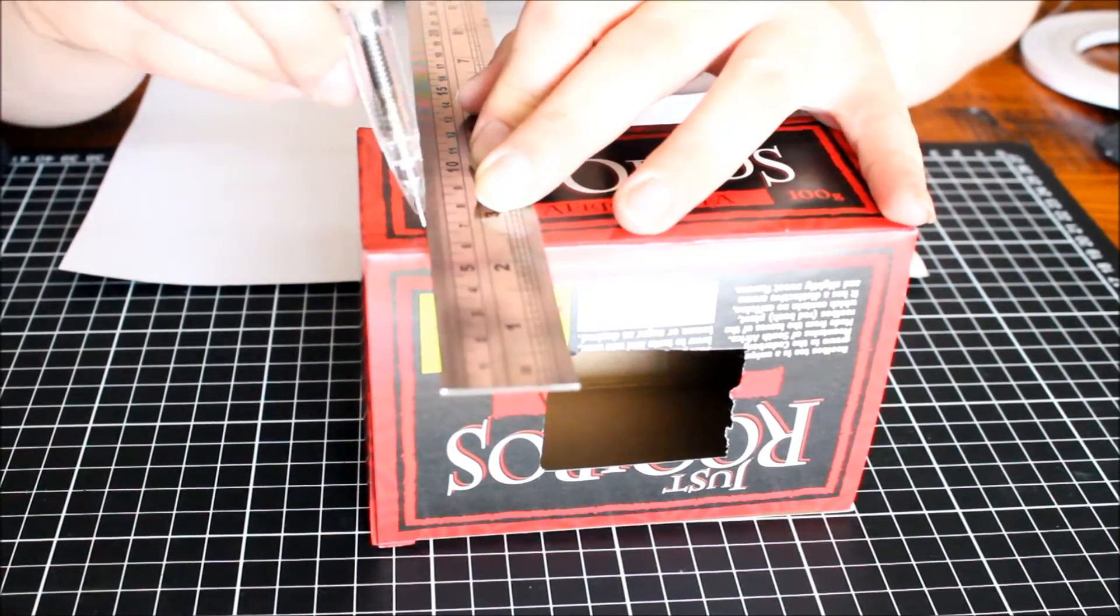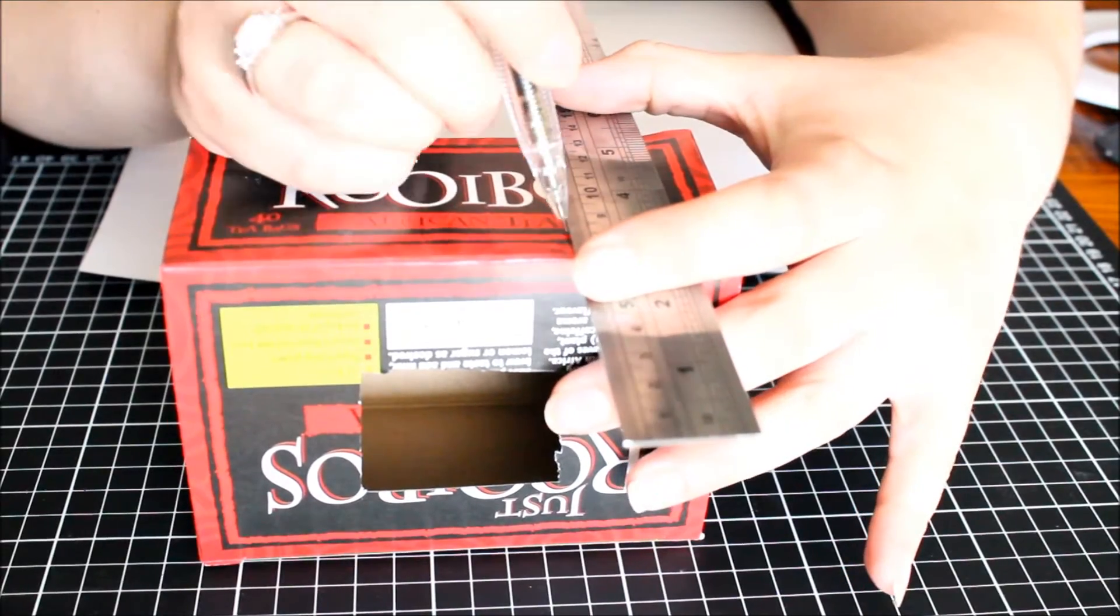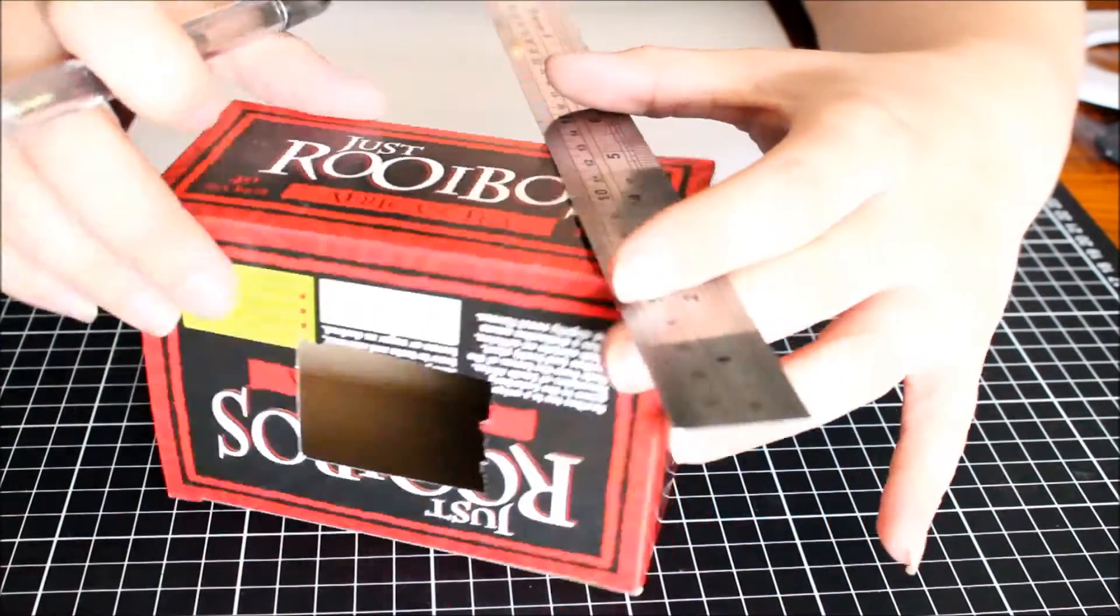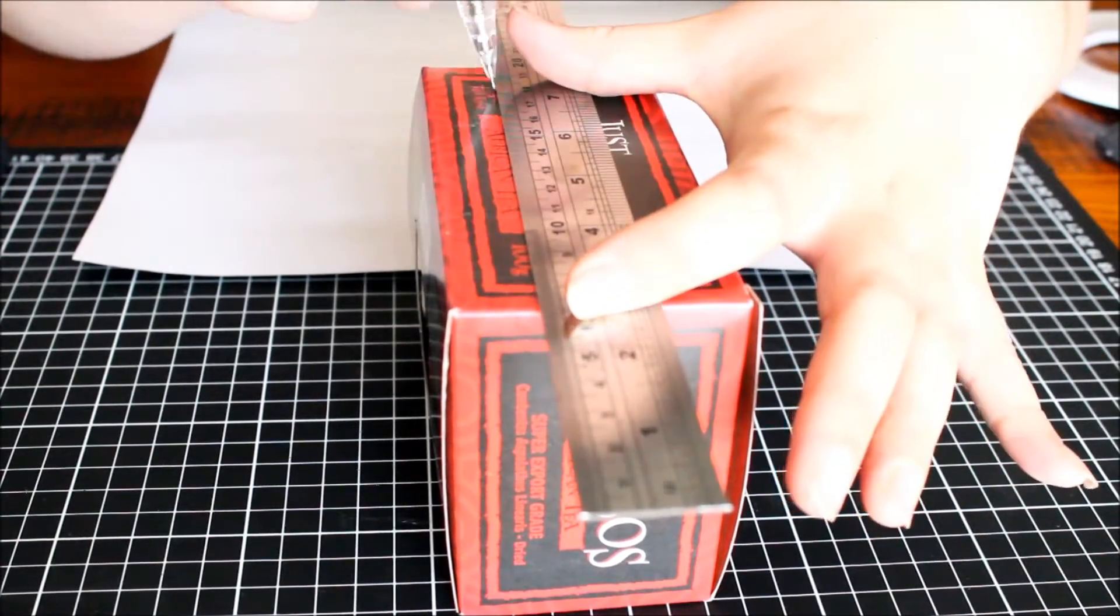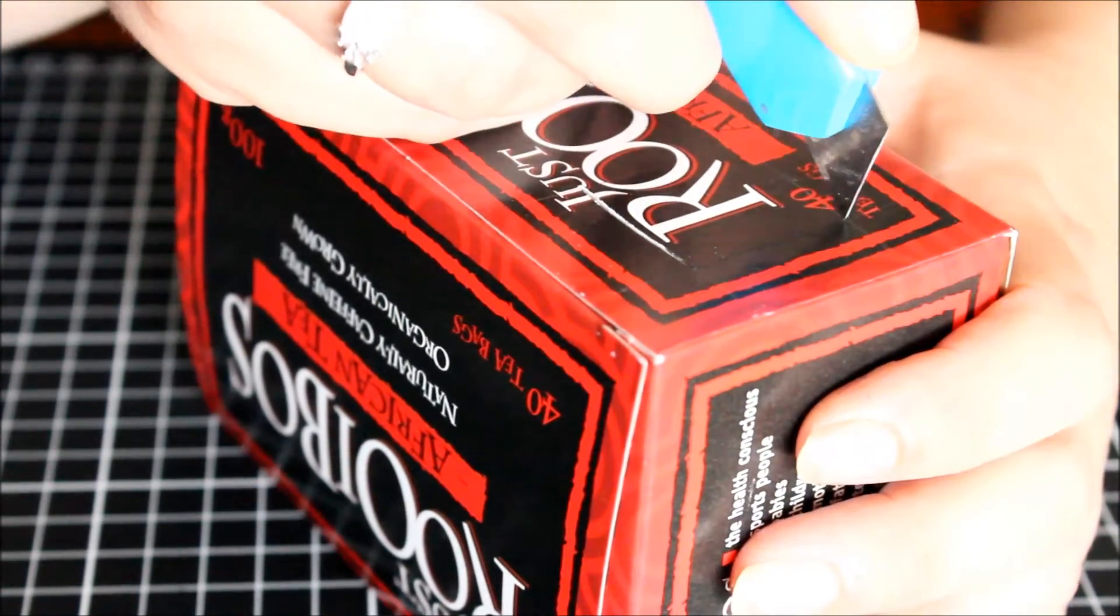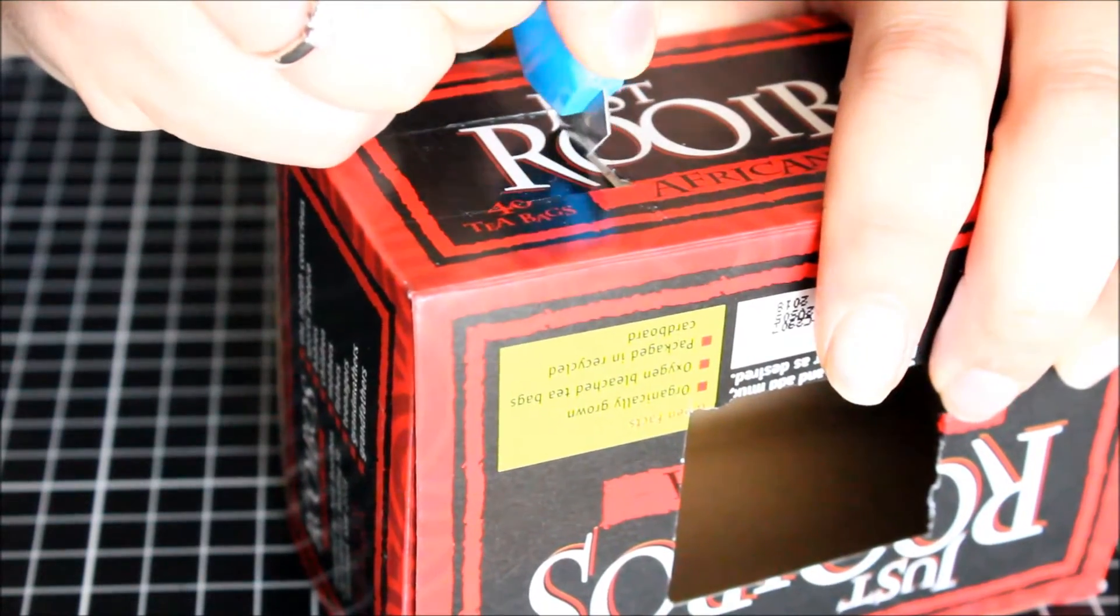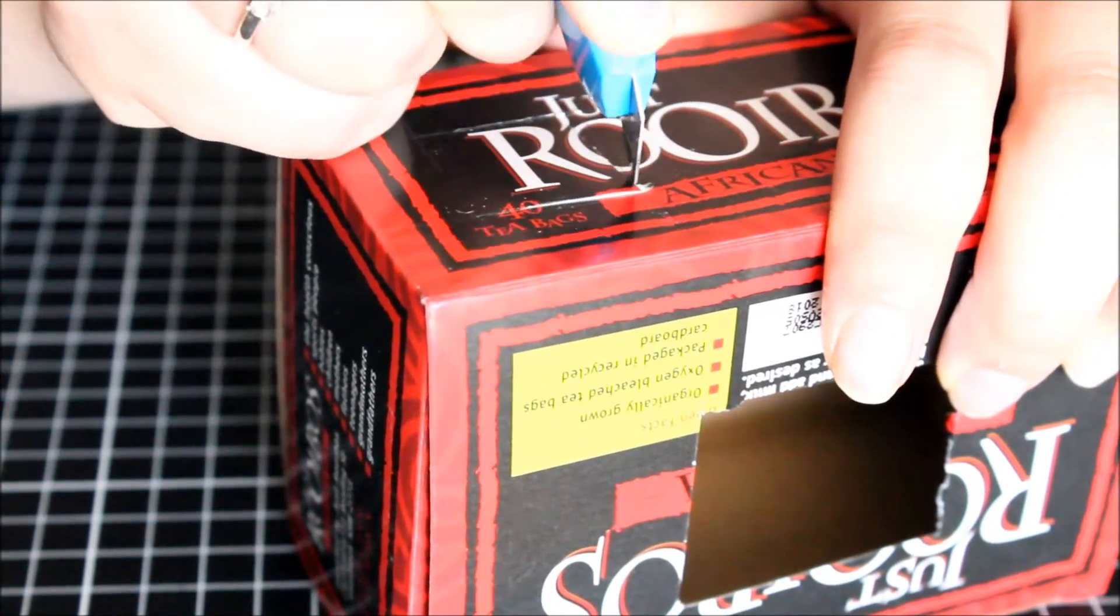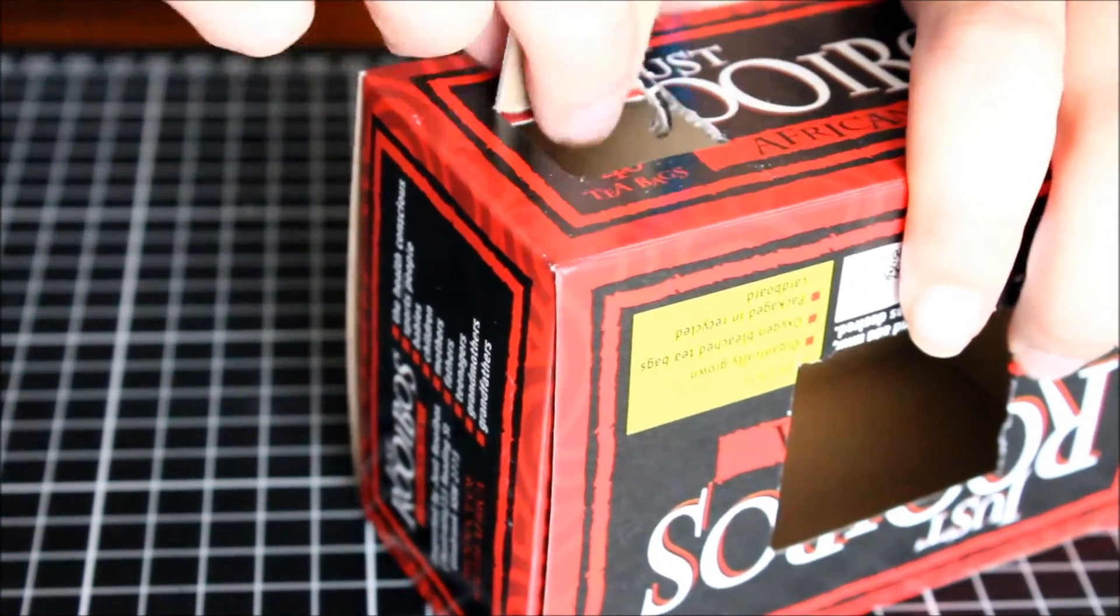Using my ruler, I'm just measuring out my windows that I'll be adding onto my little house. I'm just using the width of it and then just using the width again. Just make sure my little windows are the same shape and I'm adding that to all four sides of my little tea box. Very carefully cutting out the little squares for my windows. If you're young and want to do this, please get an adult to help you. I don't want to be responsible for someone chopping their fingers off.